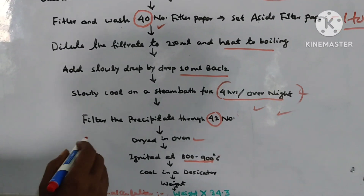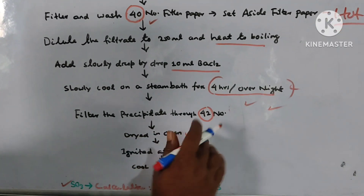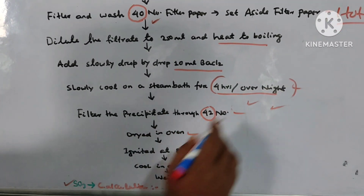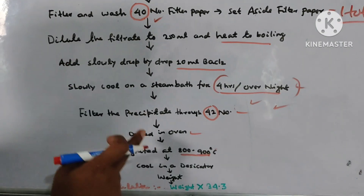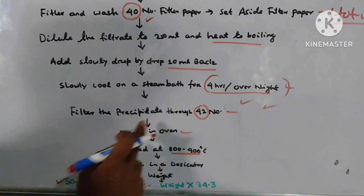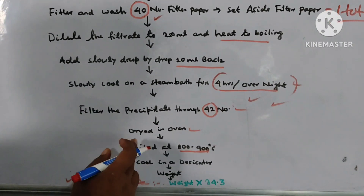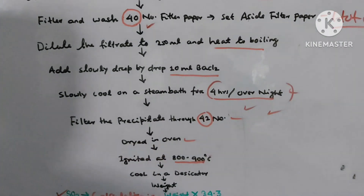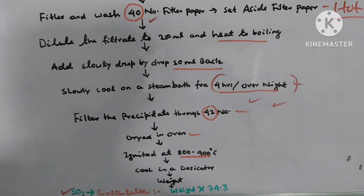Filter the precipitate through No. 42 filter paper. Then dry it in the oven.